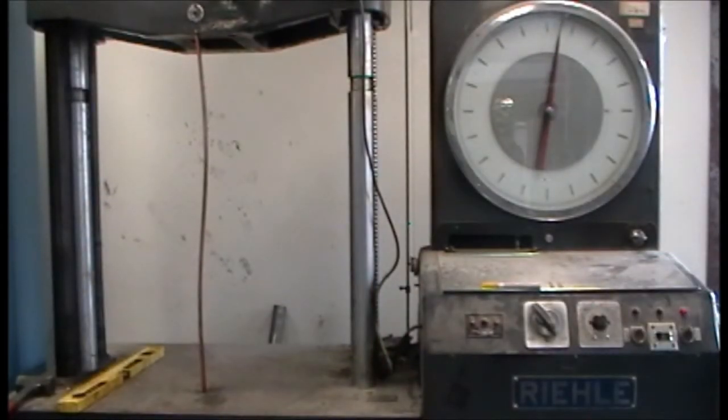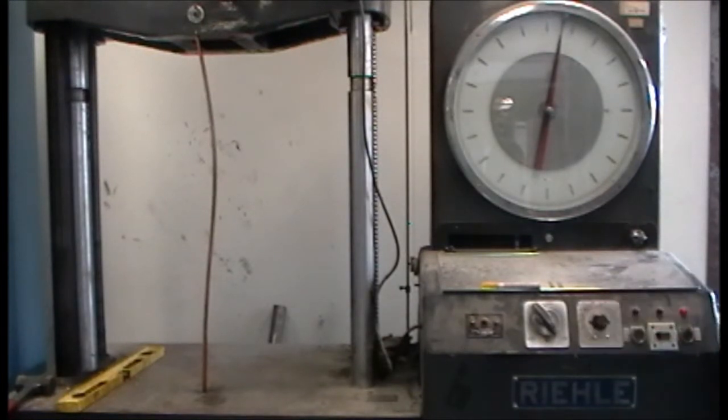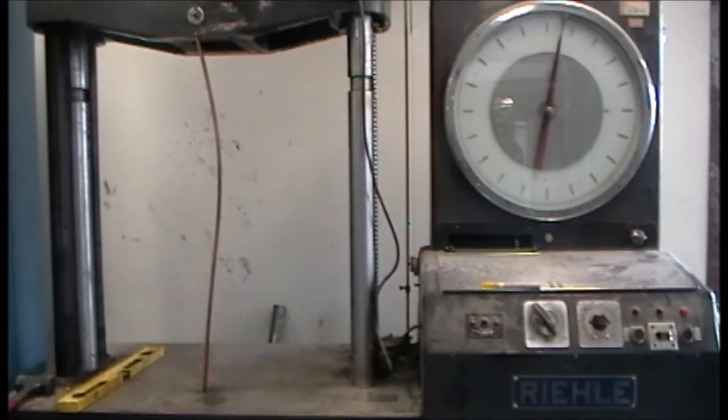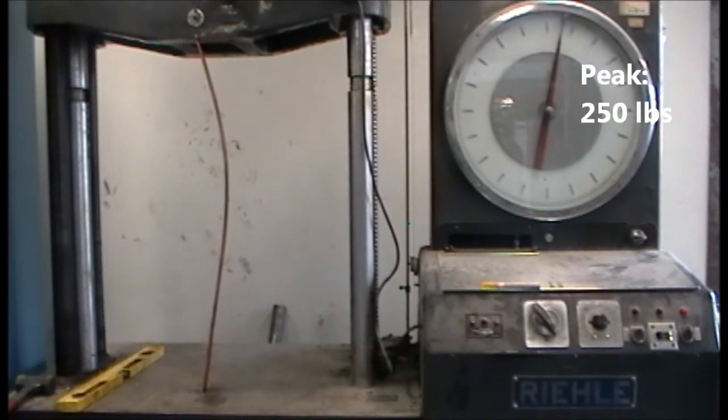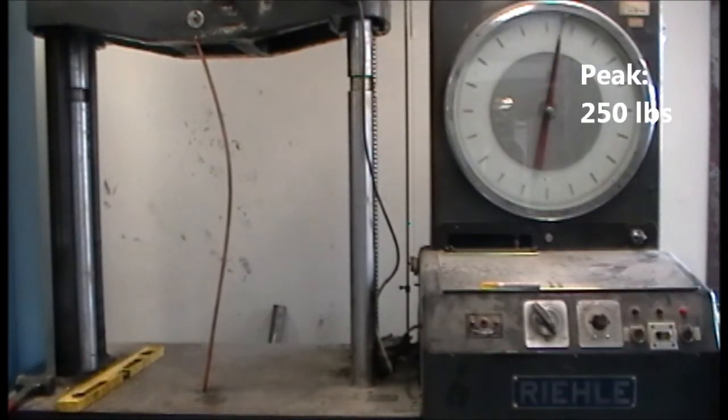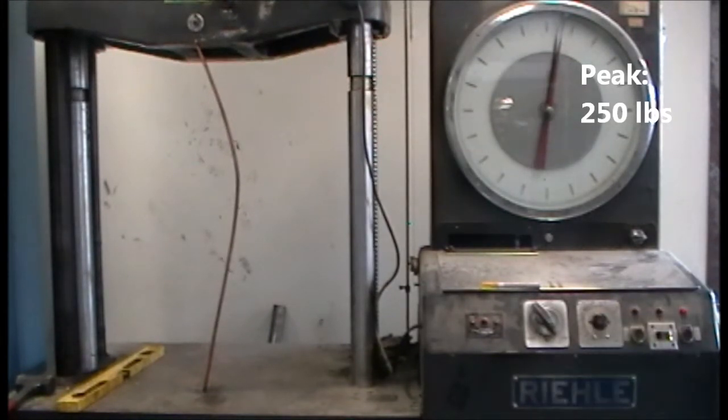Initially, it appeared that the column's deformed shape would follow its initial full sine crookedness. But with increased loading, the column began to move into a half sine or mode 1 configuration and eventually failed at a load of 250 pounds.